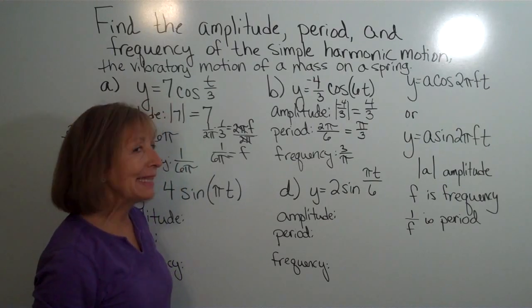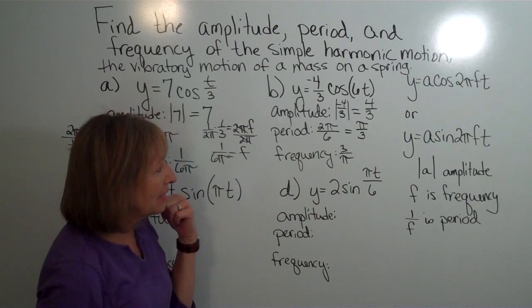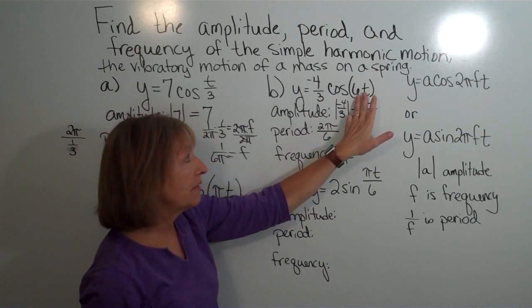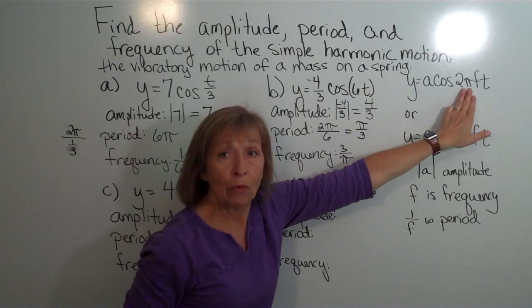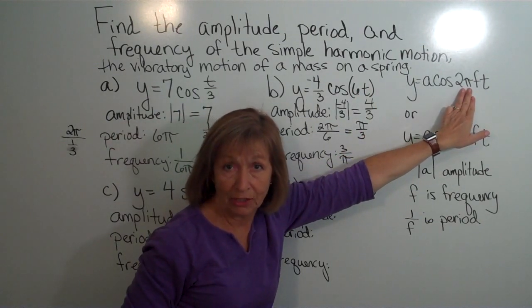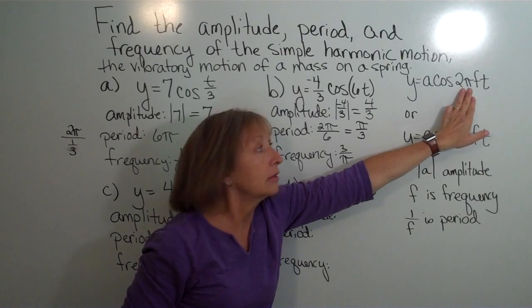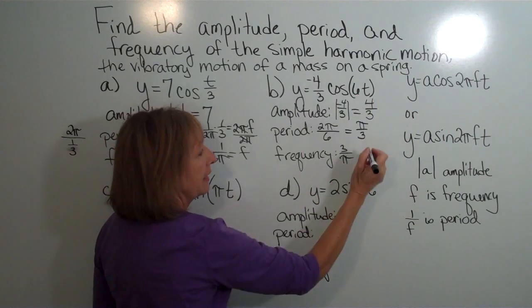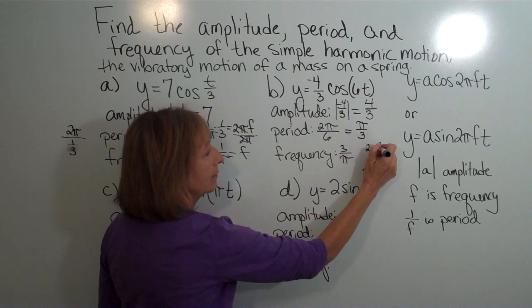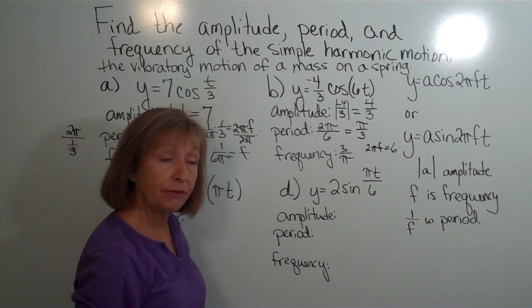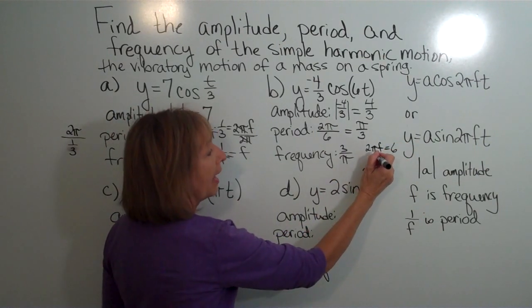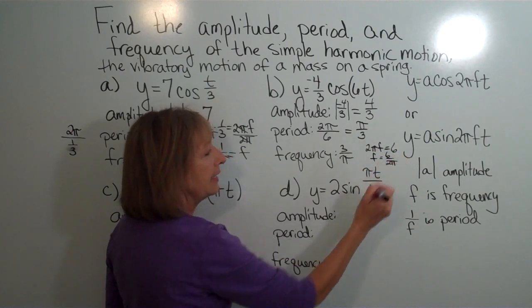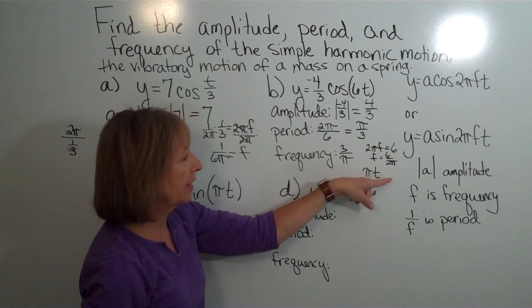We could also solve this the same way as the first example: the coefficient in front of t in our specific equation equals the coefficient from the overall model, so 2 pi f equals 6. Dividing both sides by 2 pi gives f equals 6 over 2 pi. Removing the common factor of 2, we get 3 over pi — confirming the same frequency.